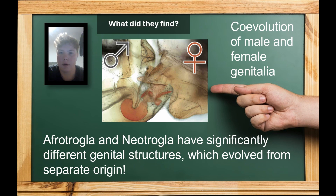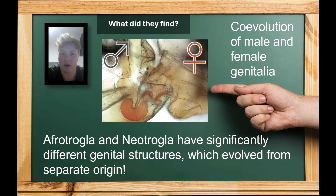They found that Afrotrogla and Neotrogla are in the same tribe but have significantly different female penis structures. They do not form a monophyletic clade, meaning they have separate evolutionary origins. They also found Neotrogla have simple female penis structures but are closely related to species with complex ones, so it's likely that a secondary simplification evolved.